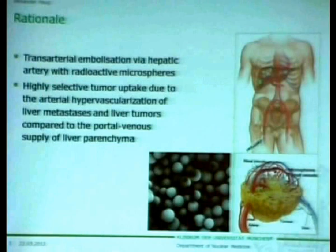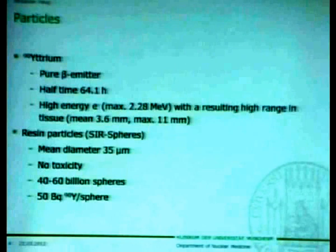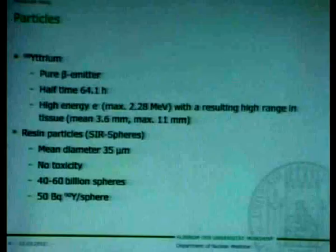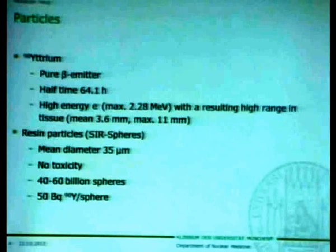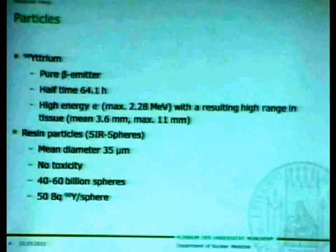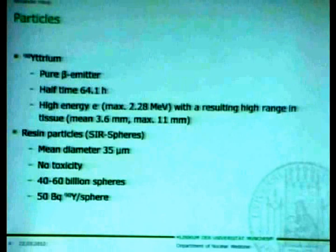We use Y-90, which is well-known in nuclear medicine, for example for radioimmunotherapy of lymphomas and mobile treatment of ankles. Y-90 is a pure beta-emitter with high-energy electrons of 2.28 mega-electron volts, and this high energy results in a high range in human tissue, which is on average almost 4 millimeters mean and a maximum of 11 millimeters.